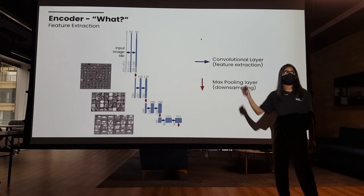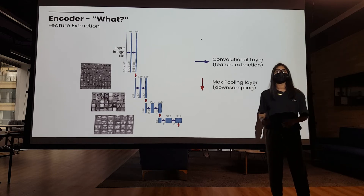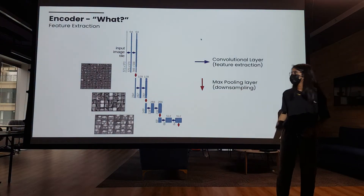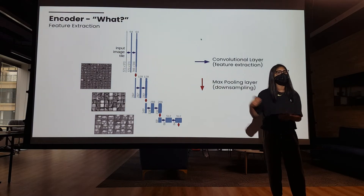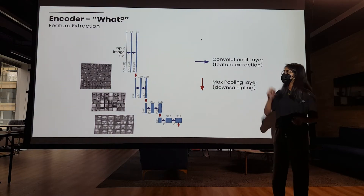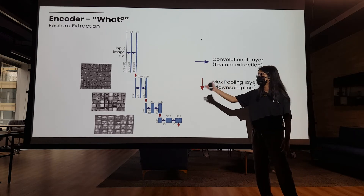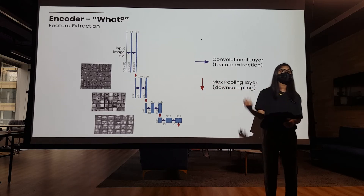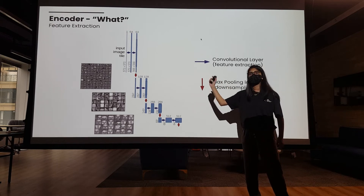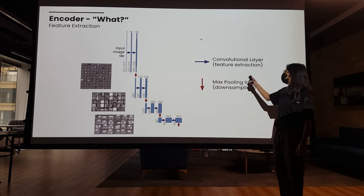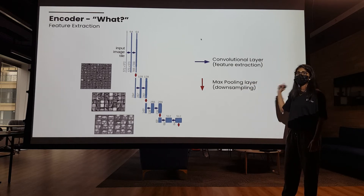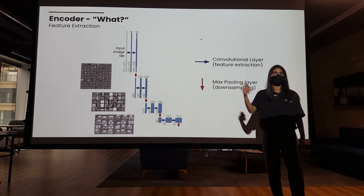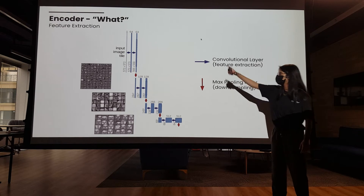First, we go through the encoder. The encoder's task is essentially to find the 'what' and gain context about what's actually in the image. It does this by encoding the image into different feature representations at multiple levels. It starts off with very high-level features such as edges, and then performs more computations to make the features more specific — from edges to shapes, from shapes to objects. These computations are performed by the convolutional layer and the max pooling layer. The max pooling layer is used for downsampling, decreasing the size of the image proportionately. This pattern is repeated a few times in the encoder.